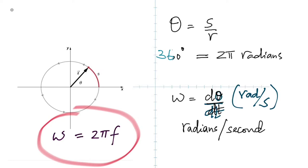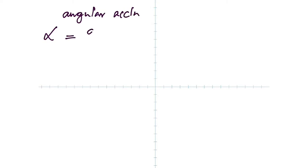You can find omega by using dθ/dt or 2π times f, where f is rotations per second. Now, angular acceleration — alpha. Alpha is dω/dt, and the unit is radians per second squared — just like meters per second squared. So instead of meters per second squared, you have radians per second squared.